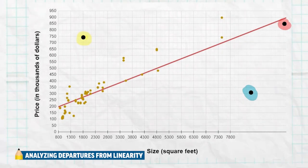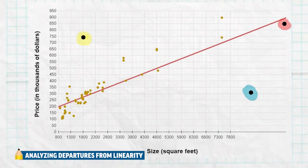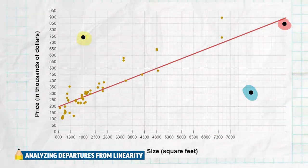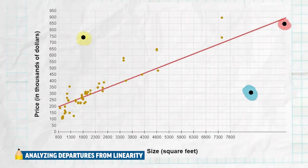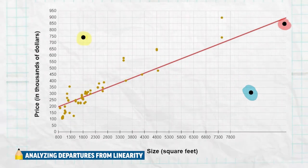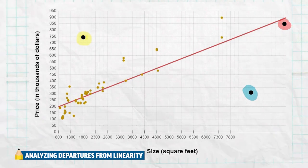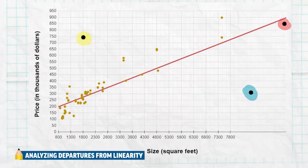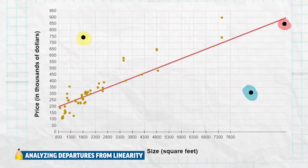Here we see three points highlighted in yellow, red, and blue. These are points I added to our scatter plot for the size and price of several houses. Let's first talk about the yellow one, which is an outlier in the Y direction. Why is this point an outlier? It doesn't fit the pattern. It's actually a fairly small house at about 1,800 square feet, which is not an unusually small or big house — it's not an outlier in the X direction.